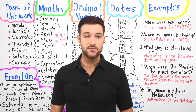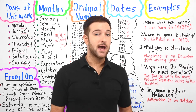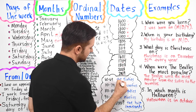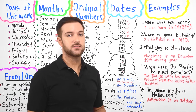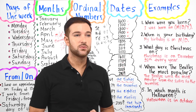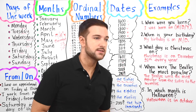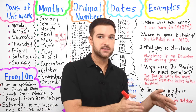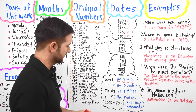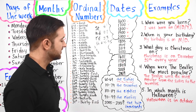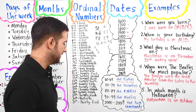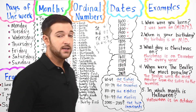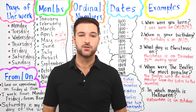When talking about events during a specific decade, you say it like this: from 1960 to 1969, you say 'the 60s.' For example, the Beatles were popular in the 60s. 1970–1979 is the 70s, 1980–1989 is the 80s, 1990–1999 is the 90s, and 2000–2009 is the 2000s.